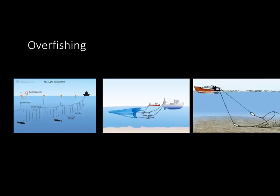Something important to focus on when looking at overfishing is our personal buying power as the consumer. If a group of consumers stopped buying a certain type of fish that was being depleted from overfishing, and everyone pledged to stop eating that fish, the problem could be solved. So in this case, you actually have real power within yourself as a consumer.